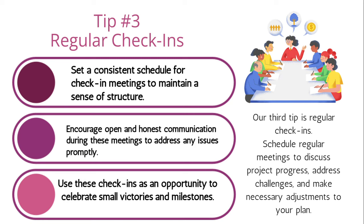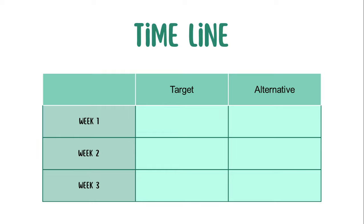Use regular check-ins as an opportunity to celebrate small victories and milestones. If something goes off track, redefine the plan and adjust things according to what is remaining and what has to be done. I've shown a timeline here — with the deadline at 10th October, your targets should be decided week-wise. As the saying goes: if you fail to plan, you plan to fail. Have a timeline with week one and week two targets and alternatives.